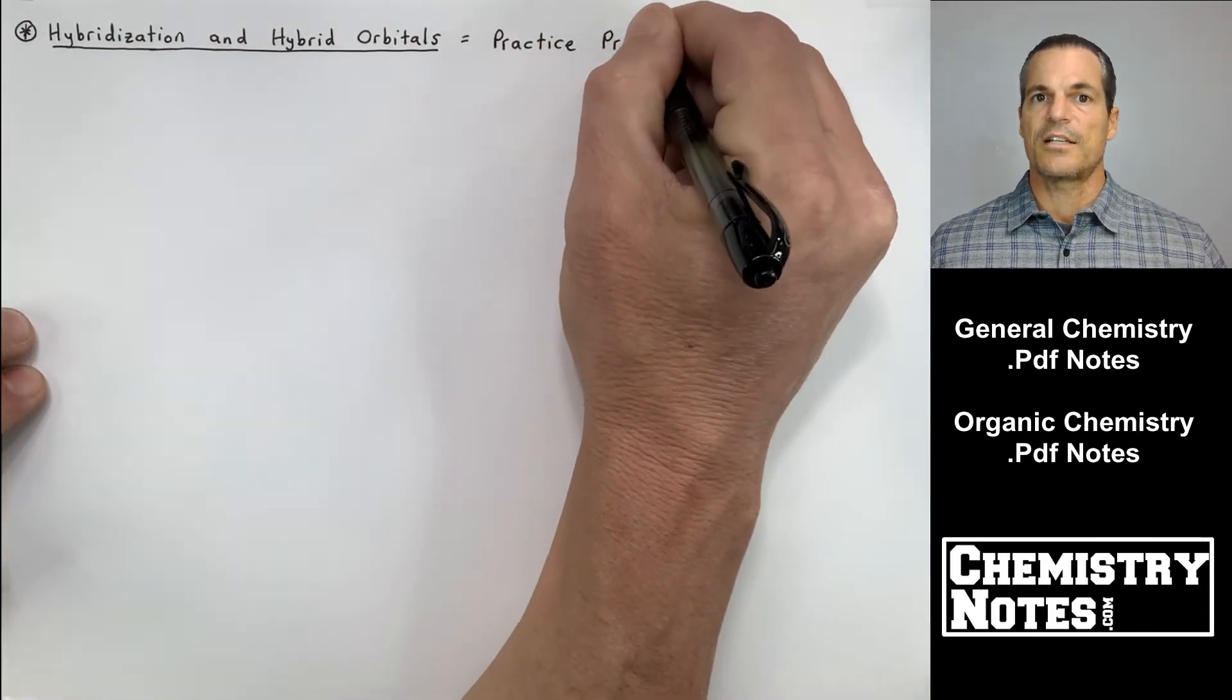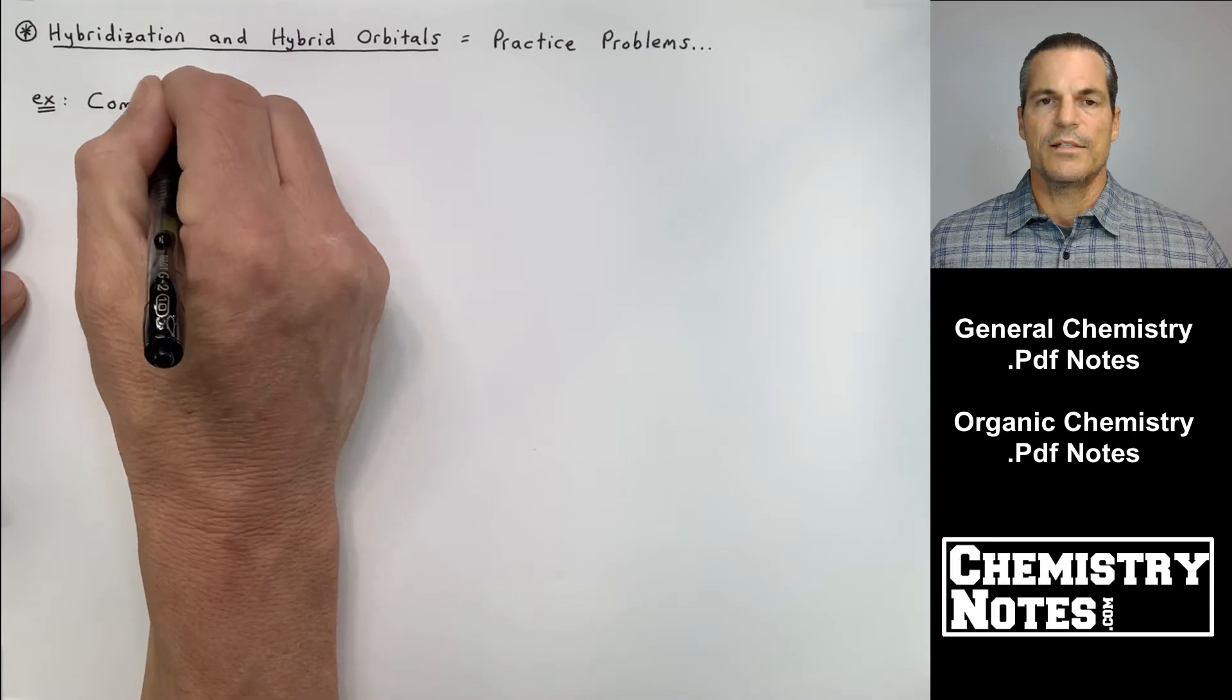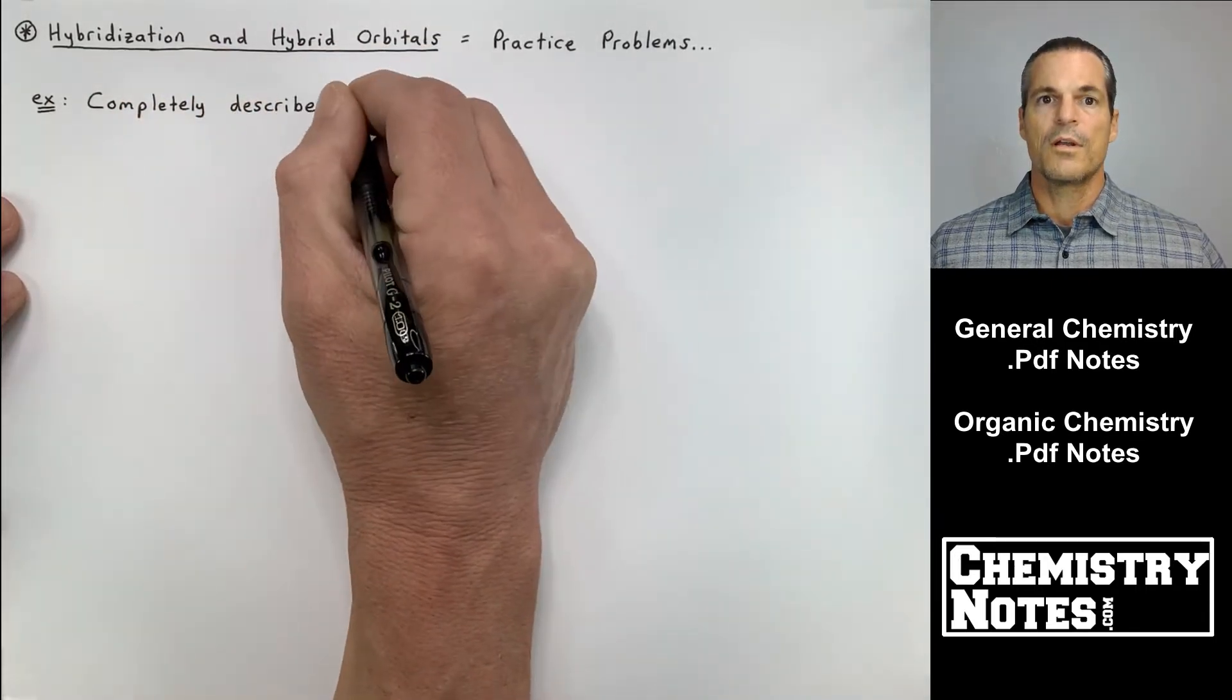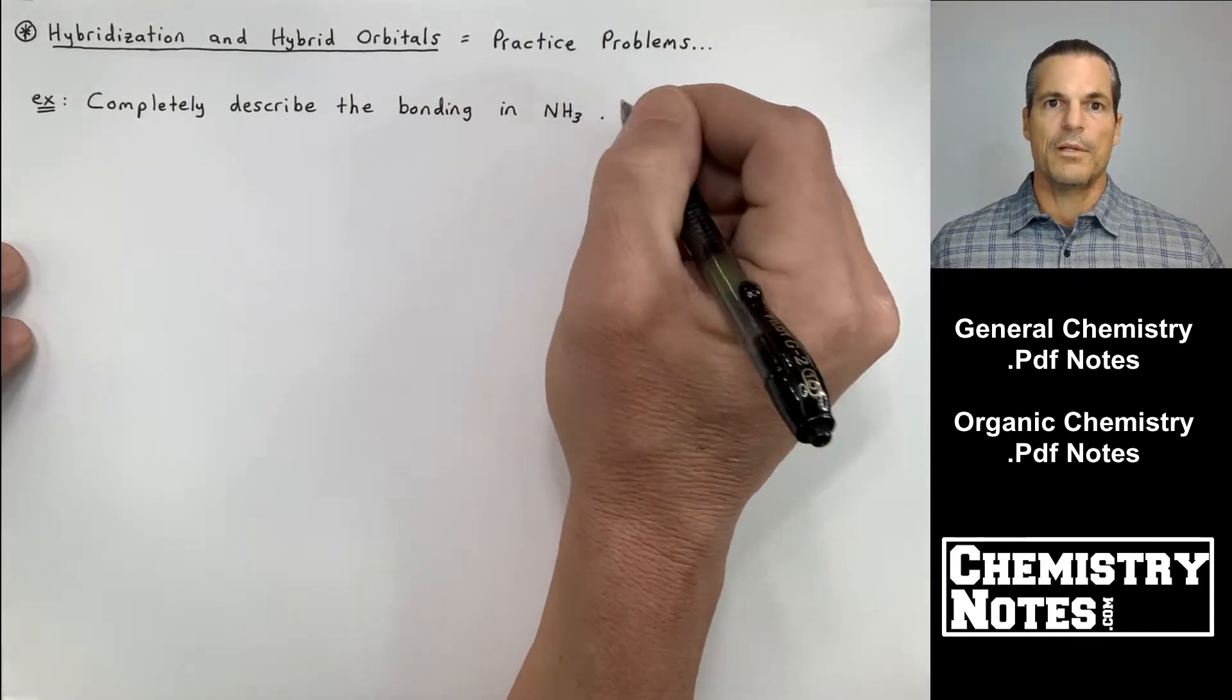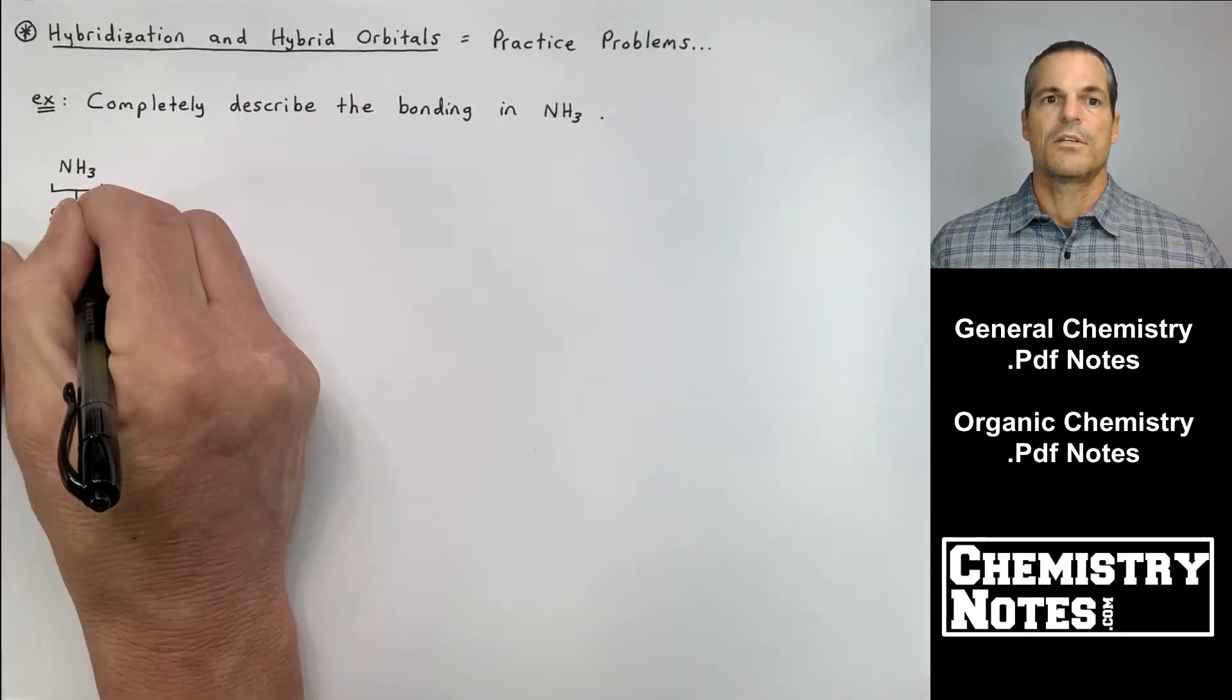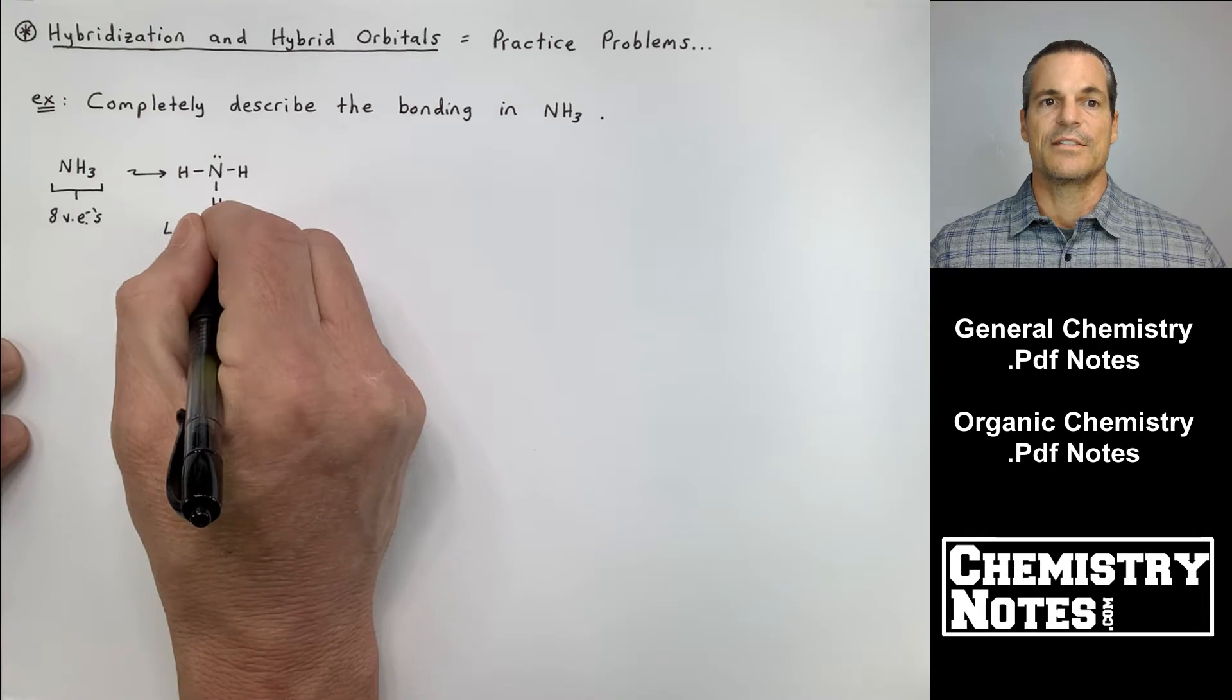We've also discussed sigma bonds and pi bonds. So we did quite a few sample problems, but today's video I just want to do four practice problems on hybridization and hybrid orbitals. So I got four problems and they each start at the top of their own new page of notes. They'll help us make sense of the first two videos of this section.